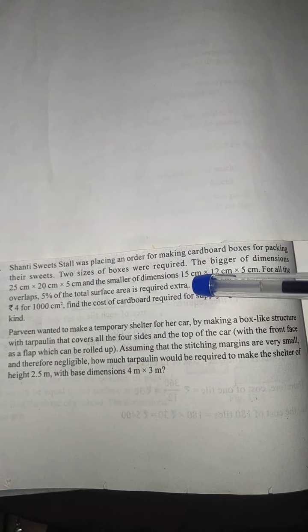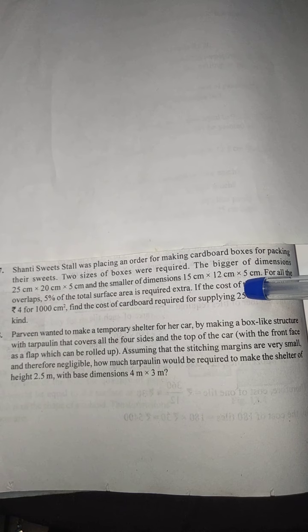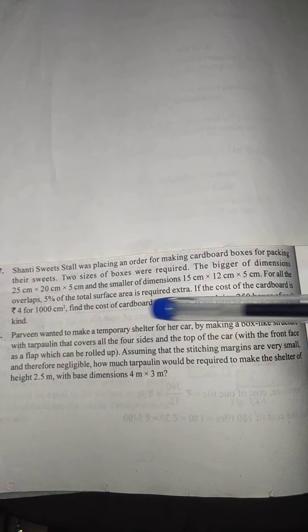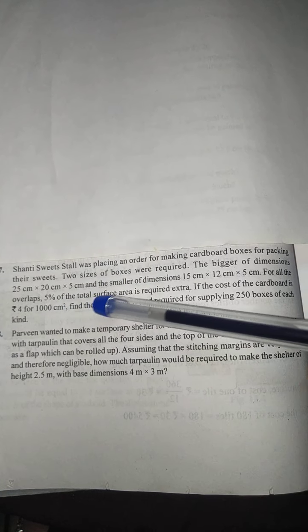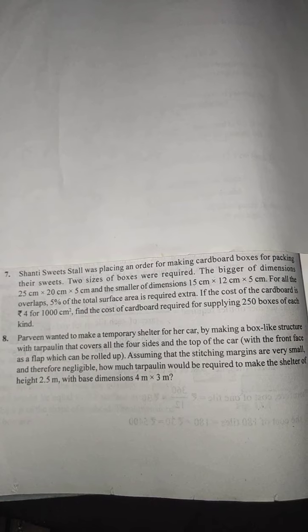And for smaller box, l is 15 centimeters, b is 12 centimeters, and h is 5 centimeters. And overlaps - overlaps is 5 percent for all. Extra is required. I will show you what is overlaps, children.